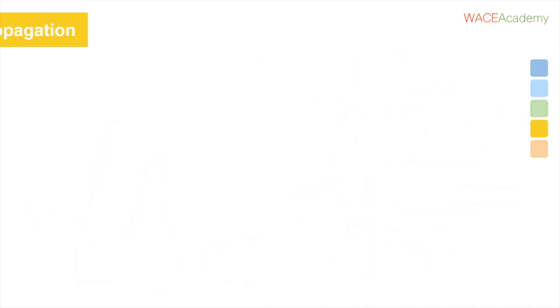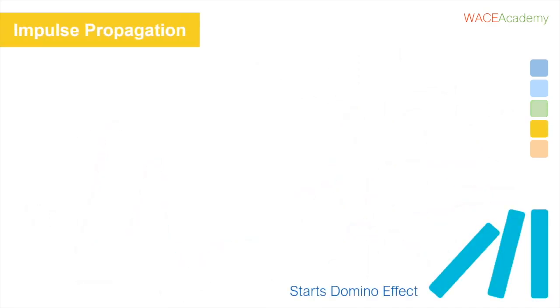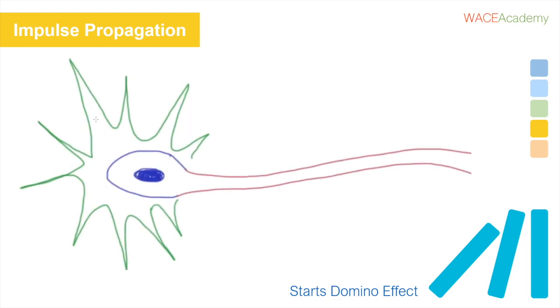When this big change occurs, it starts a domino effect that pushes the action potential all the way through to the end of the neuron. Let's take a change towards the positive as an example. The first thing it does is to open lots of positively charged sodium ion channels at the start of the axon.